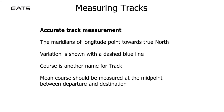Measuring tracks — accurate track measurement. The meridians of longitude point towards true north. Variation is shown with a dashed blue line. Course is another name for track. Mean course should be measured at the midpoint between departure and destination.